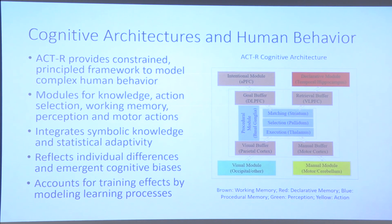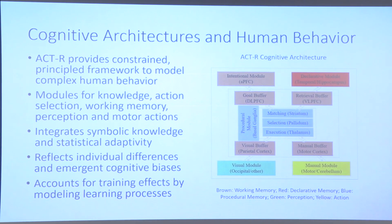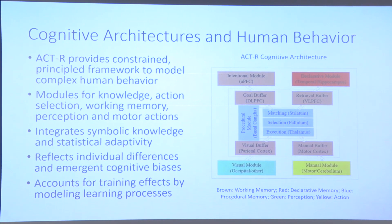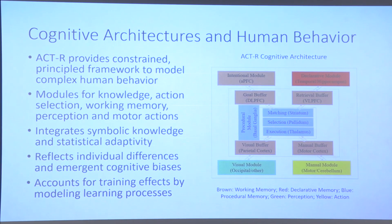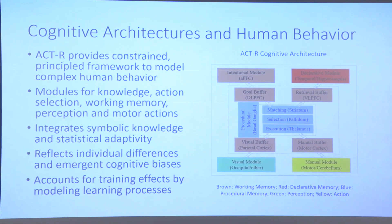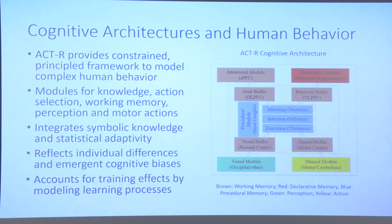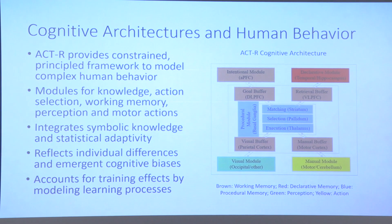ACT-R is a cognitive architecture I've been involved with for the bulk of my career. It's strongly constrained by cognitive psychology and experimental results derived over the years. It consists of a number of buffers associated with brain areas that interact in constrained ways. It integrates symbolic knowledge and symbolic reasoning with sub-symbolic statistical adaptive processes, especially for memory and action selection. It's not a normative architecture, so it can reflect individual differences and cognitive biases.